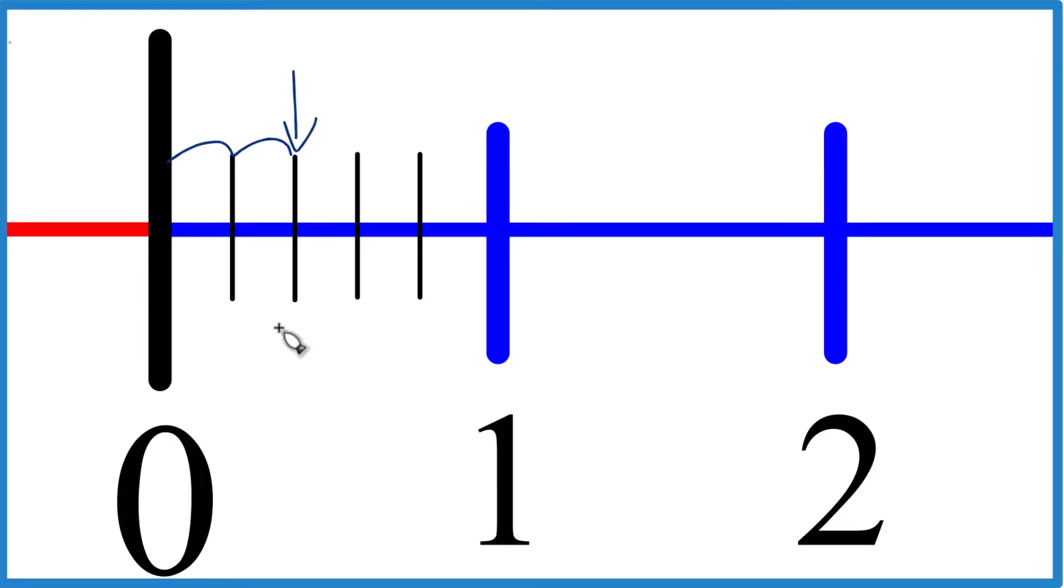That means that right here, that is two fifths on our number line. And that's how you find two fifths.